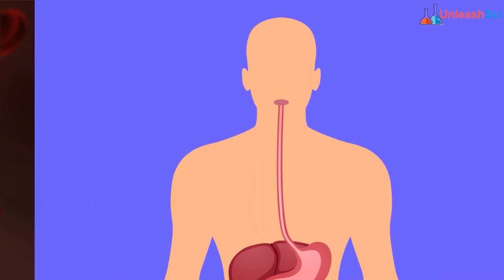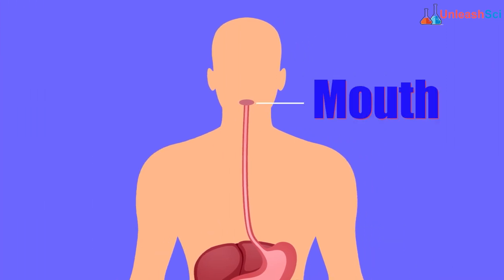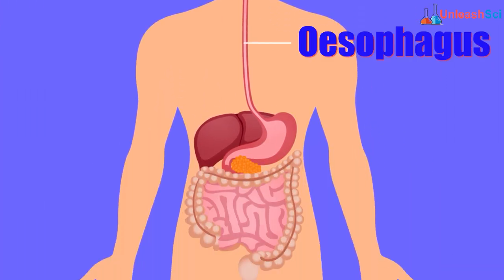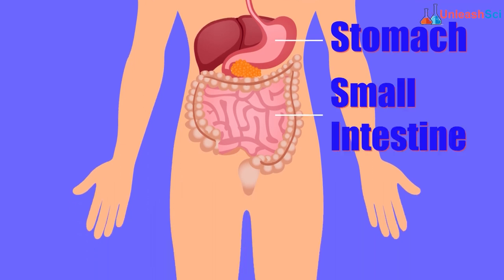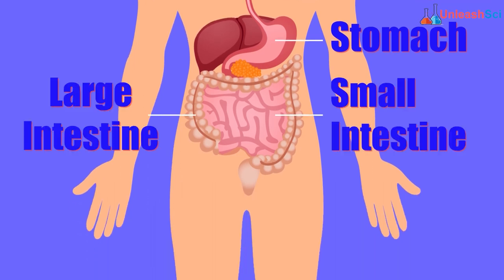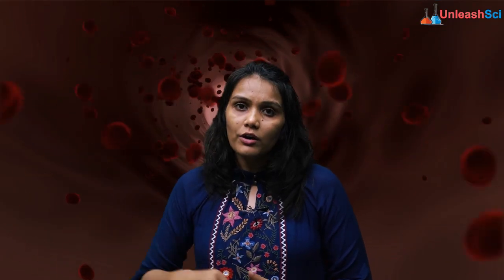Beginning first with the mouth, then comes the esophagus, then the stomach. The stomach opens into the small intestine, then the large intestine, and finally the anus. Now we will be talking about how digestion occurs in each of these organs one by one.